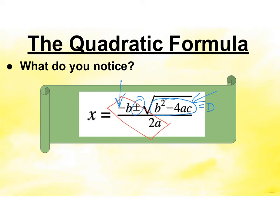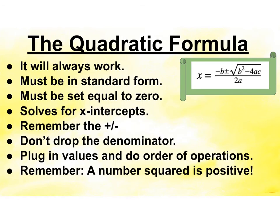Just like the axis of symmetry equation, it does have a negative b to start, so remember that's part of the formula. Don't drop your plus or minus and squish the b together into multiplication — we want two answers, so we need that plus or minus. Definitely don't drop your denominator. The quadratic formula will always work. Put it in standard form set equal to 0 first. Remember it's solving for x-intercepts. Plug your values in, then do order of operations. Remember: a number squared is always positive, so b squared under the square root should always be positive.